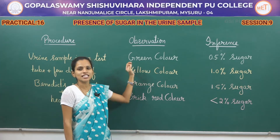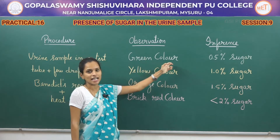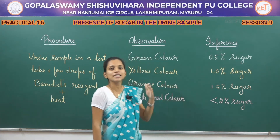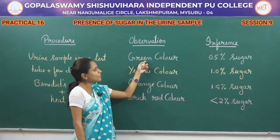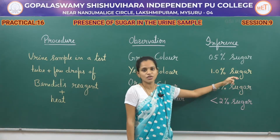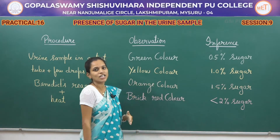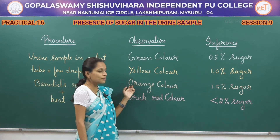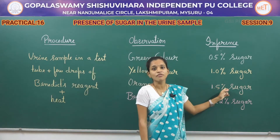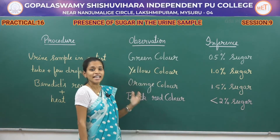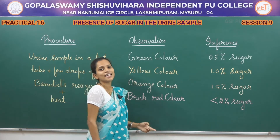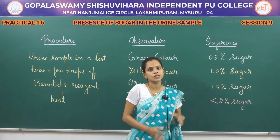While you heat the test tube, the initial colour will be green, indicating the presence of 0.5% sugar. If you still heat, the colour from green changes into yellow, indicating the presence of 1% sugar. If heating continues, the colour changes from yellow to orange, indicating the presence of 1.5% sugar. Still further heating gives brick red colour, indicating the presence of more than 2% sugar.